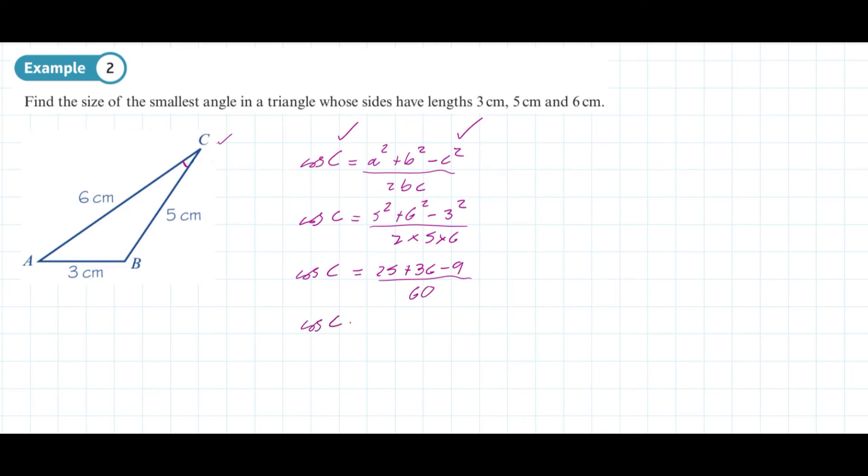So cosine C: 25 plus 36 minus 9 is 52 over 60. I'm leaving it as a fraction because it's more accurate than leaving it as a decimal when we work out what the angle is.